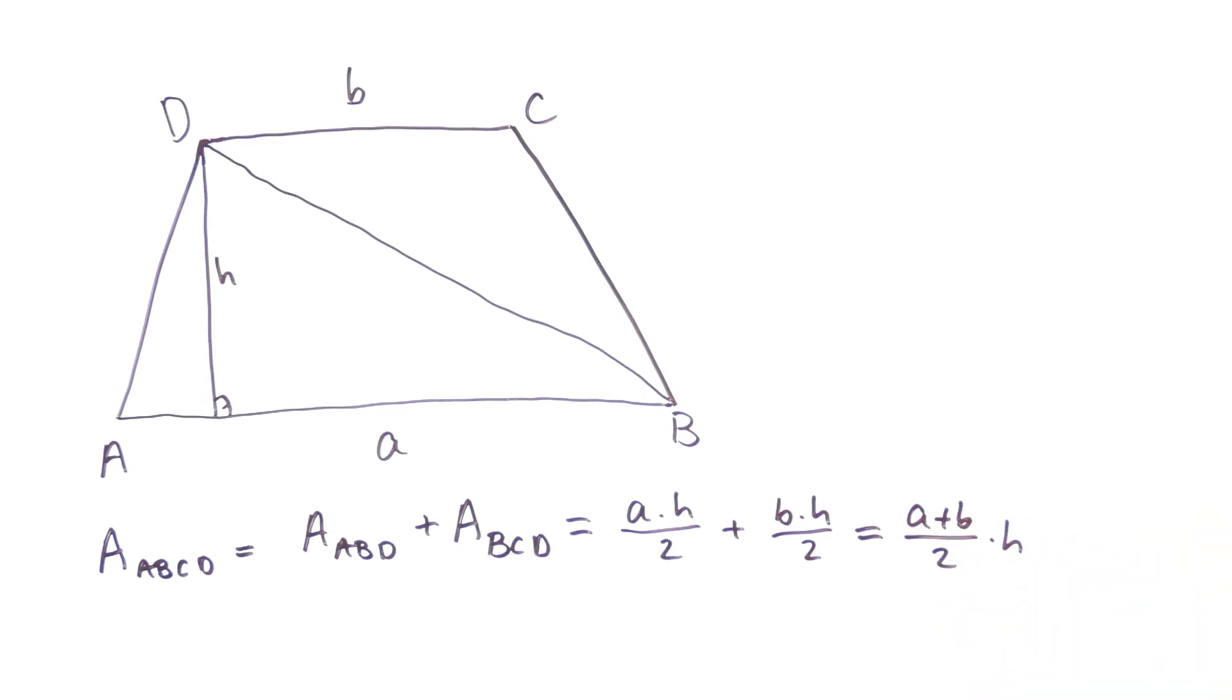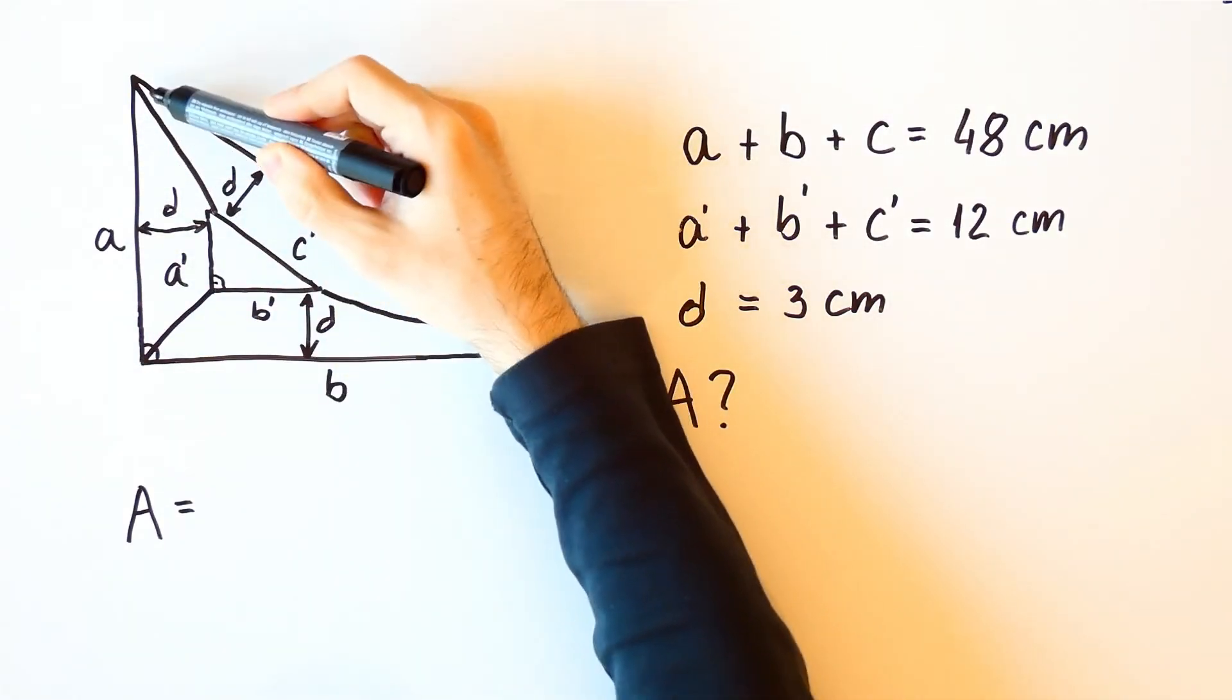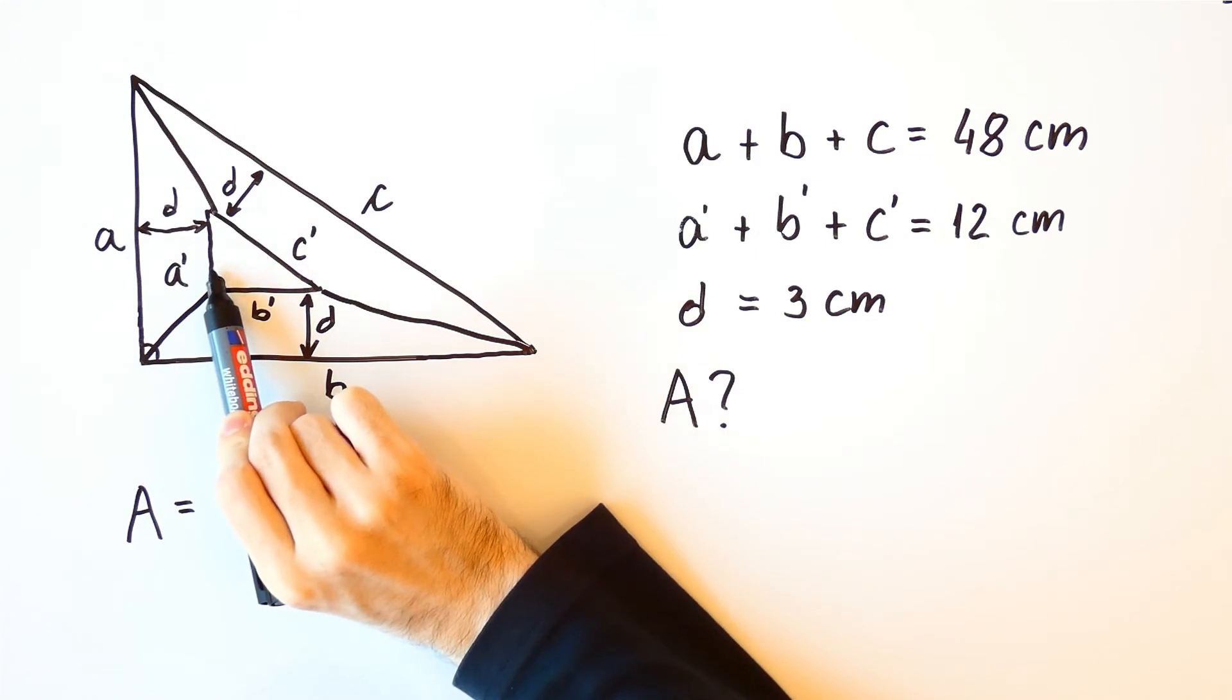Let's now return to our problem. The area of this trapezium is A plus A prime over 2 times D.